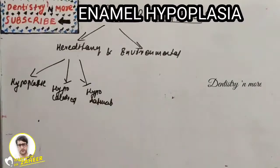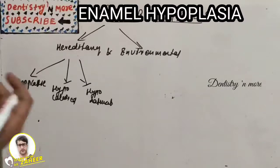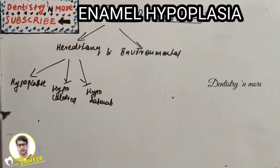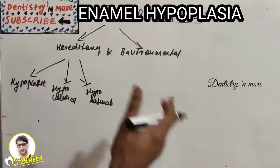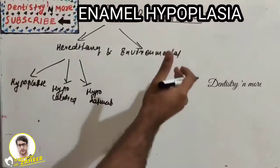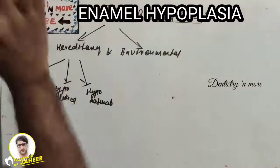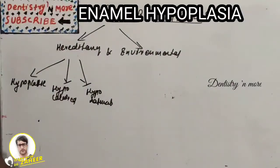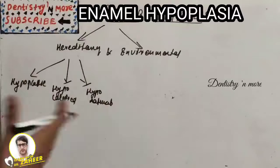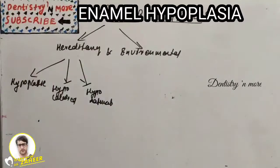The second category is the environmental type, caused by environmental factors that damage the enamel cells. Either deciduous or permanent teeth may be involved, and sometimes a single tooth — here both enamel and dentine are involved in varying degrees. Hypoplasia results only if the injury occurs during the formative stage of enamel development; after calcification, no such defect can be produced.